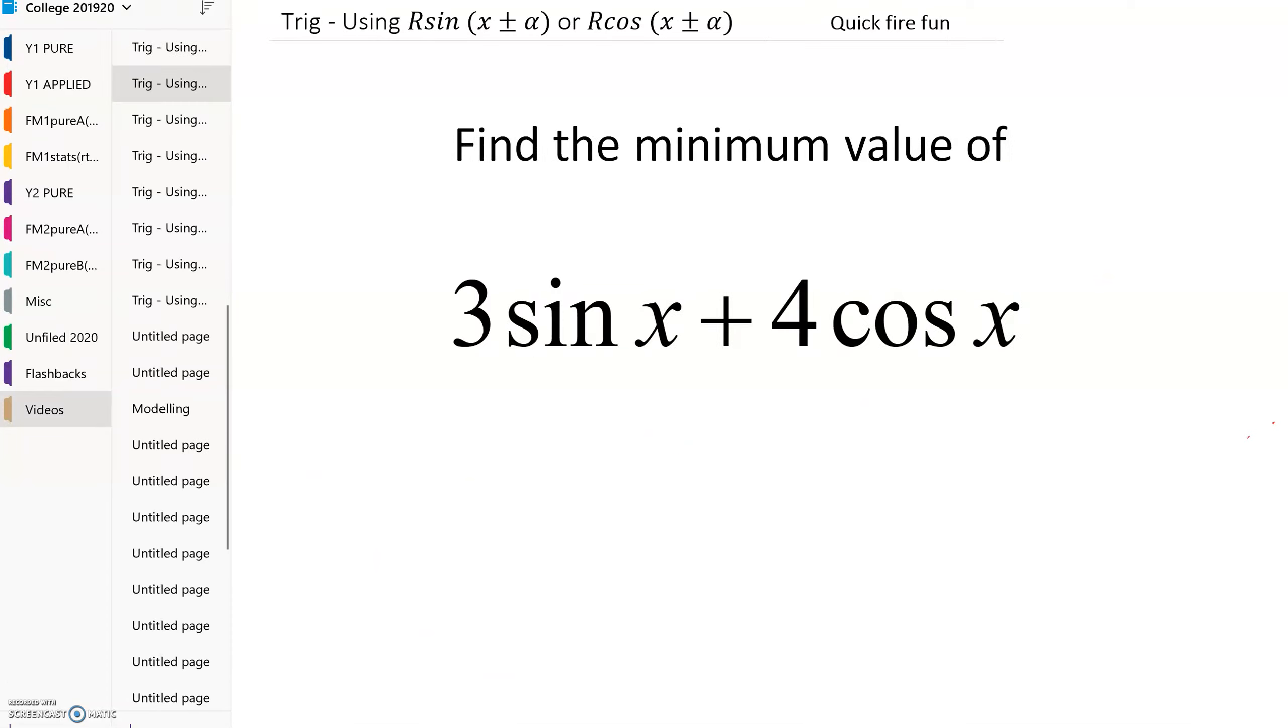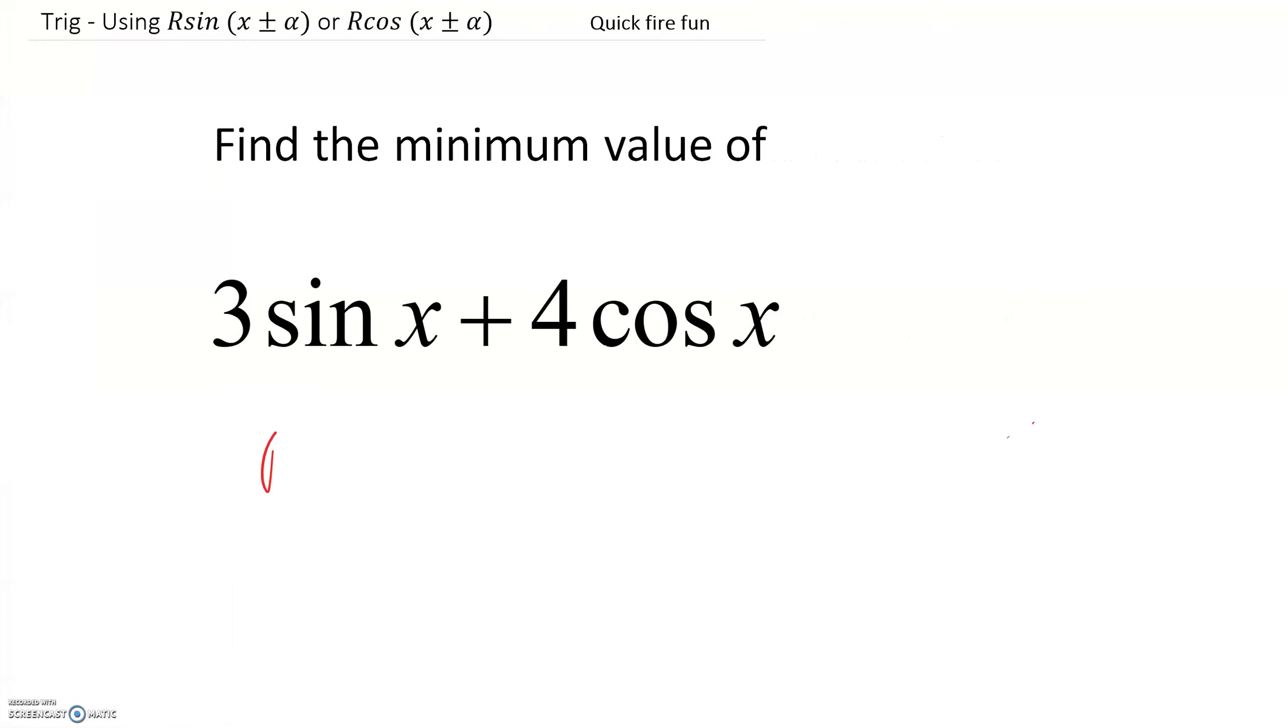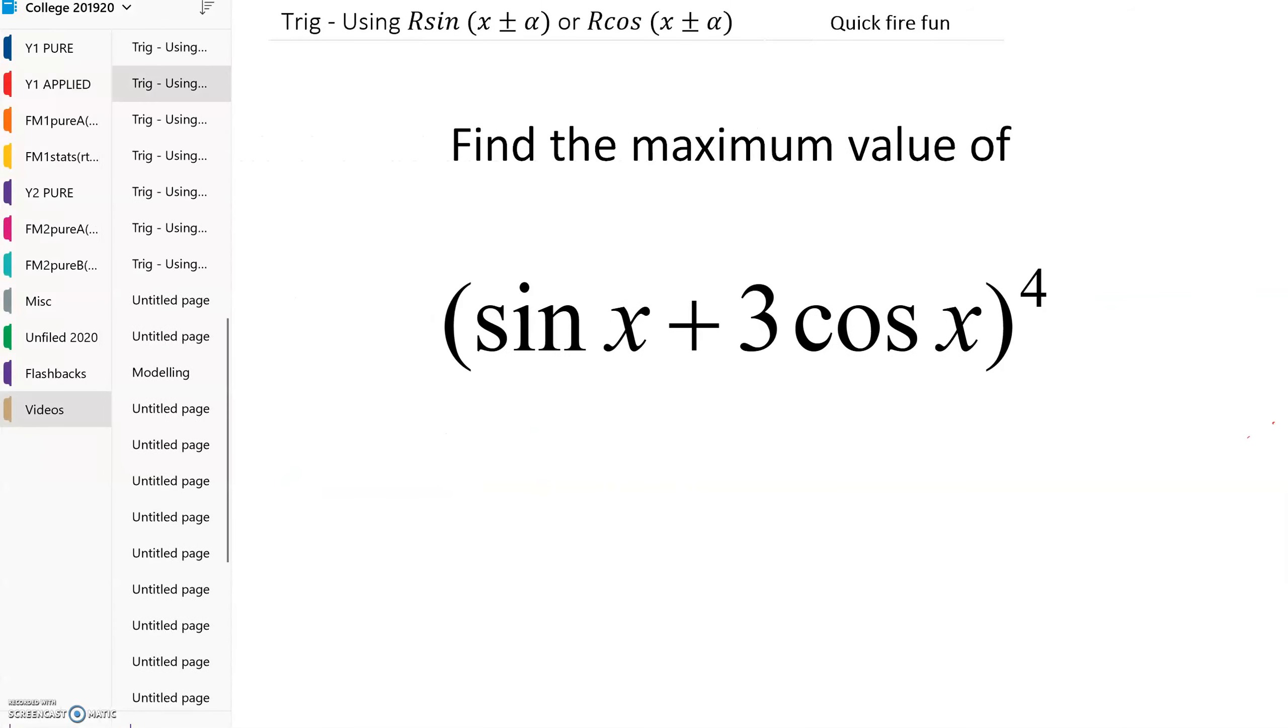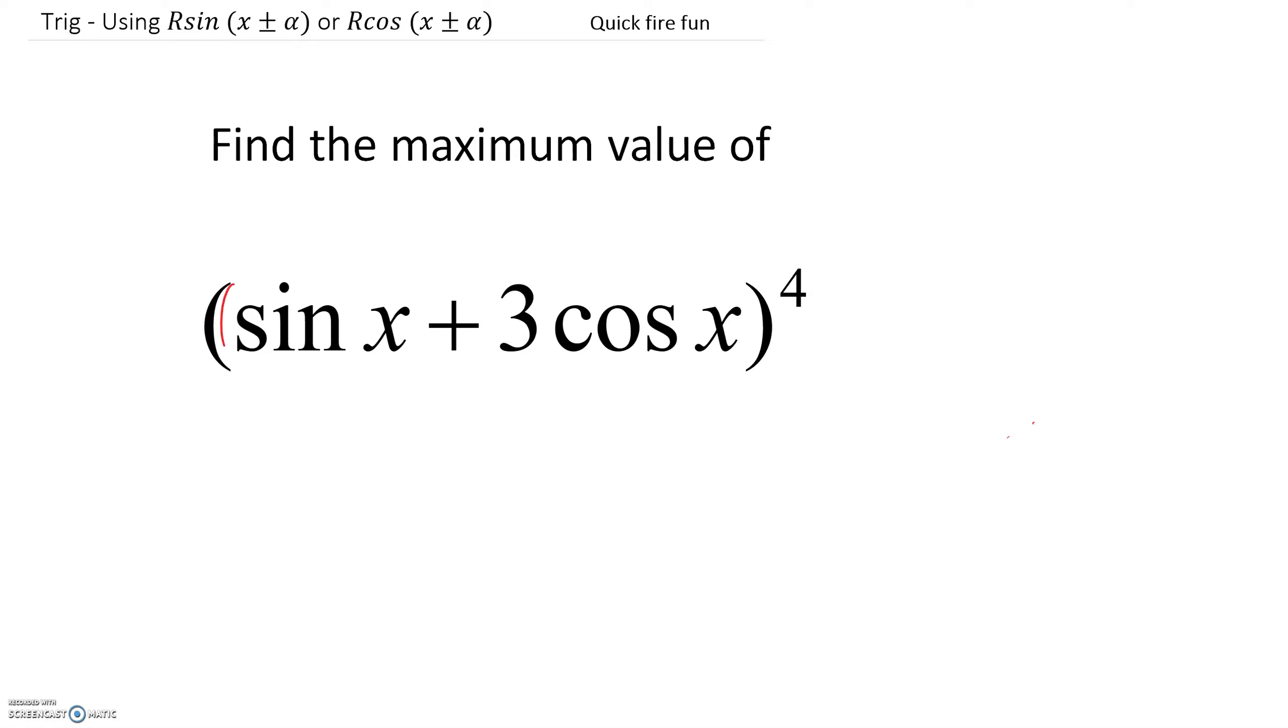Have a look at the next one. What's the minimum this can ever be? Well, R would equal 3 squared plus 4 squared square rooted. So R would be 5. And so the minimum value would be minus 5 because the minimum sign can ever be is minus 1. Looking at another one, what's the maximum this can ever be? Well, that's similar to the other one. We're going to have root 10 would be our value of R. And so we're going to have this. So the maximum the thing in the bracket can ever be is root 10. And we're then going to do that to the power of 4, which is root 10 times root 10, which is 10, and then times by another 10. So the answer to this is going to be 100.